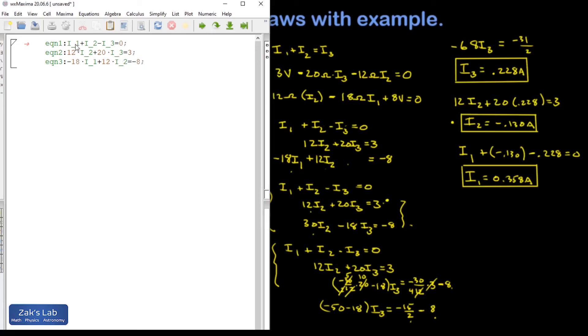Okay, just a couple points about what I've done here. I gave the equations names, equation 1, 2, and 3. And my currents are written as I underscore 1, I underscore 2, I underscore 3. I put a semicolon after each equation, which is going to make Maxima repeat them to me after I enter them.